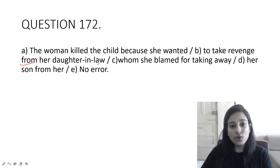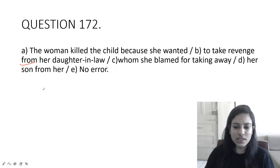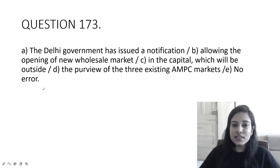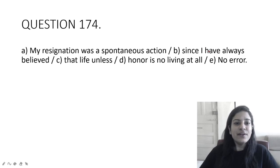The Delhi government has issued a notification allowing the opening of new wholesale market in the capital which will be outside the purview of the three existing APMC markets. There is no error anywhere in this. Notification allowing, present participle is used correctly.